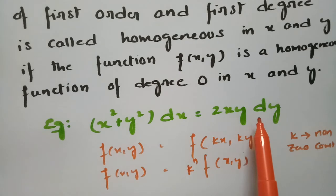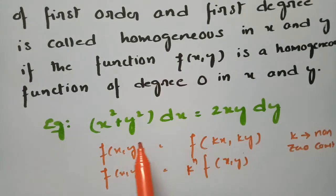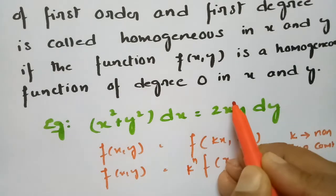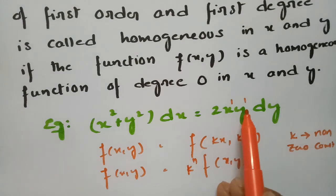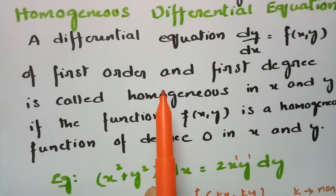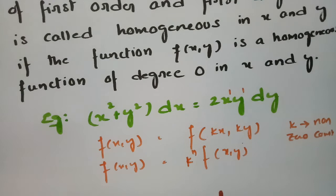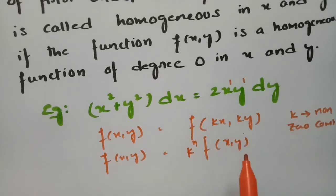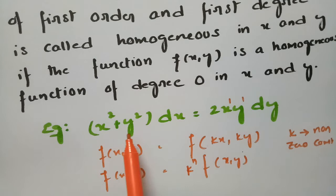How can we tell? It has uniformity — it maintains the same degree throughout. Here the degree of x² is 2, the degree of y² is also 2, and here x¹ times y¹ together gives degree 2. So throughout the equation it maintains degree 2, therefore it is a homogeneous differential equation. If the equation maintains uniformity or the same degree, it is homogeneous.